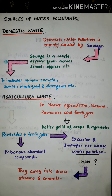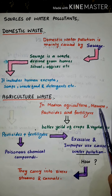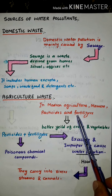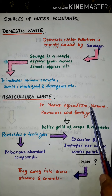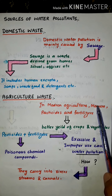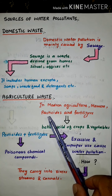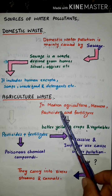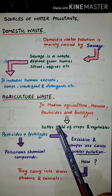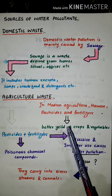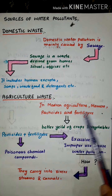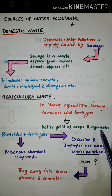The second major source of water pollutants is agricultural waste. In the modern agriculture system, we use animal manure, pesticides, and fertilizers. Manure, pesticides, and fertilizers are used for better yield of crops and vegetables.